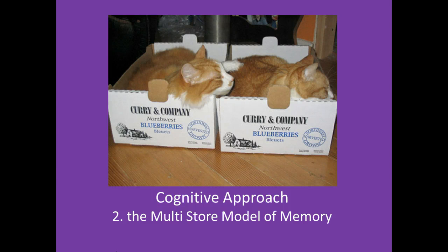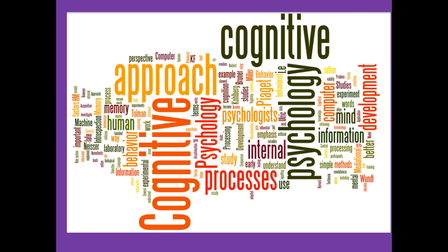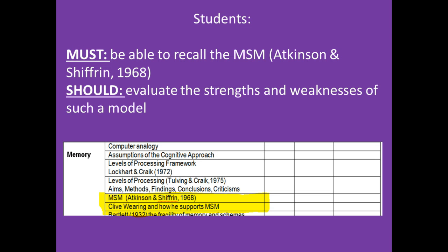Welcome back. This is our second video in our flip series for the cognitive approach. It's all around the multi-store model of memory — our oldest attempt to explain how memory works. It's based on the idea that we have different stores in our brain where we put memories, and the efficacy of memory is dependent upon which store they are placed in. The cognitive approach emphasizes the internal processes of the mind and sees the brain as a computer processing information. A model is an attempt to understand how this happens.